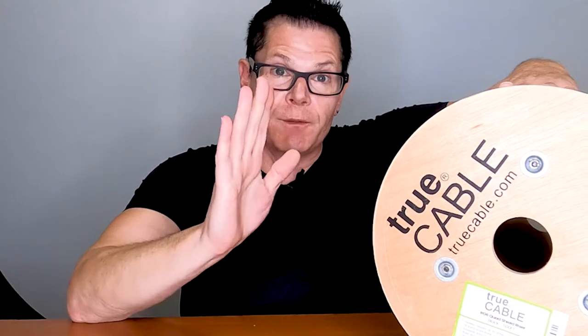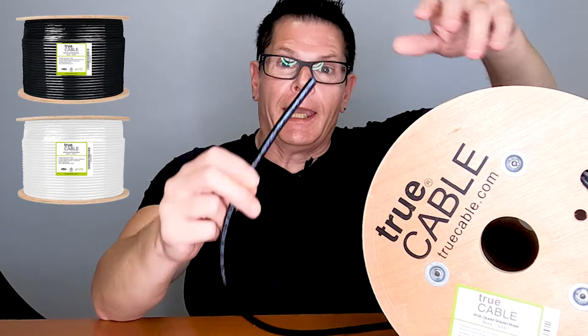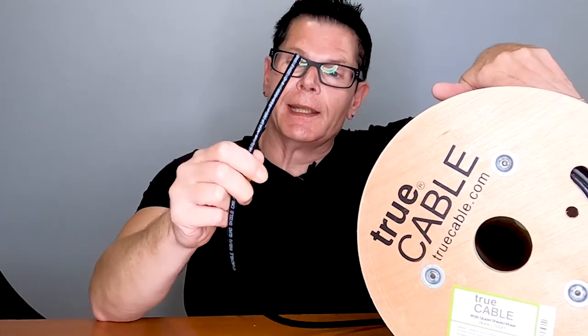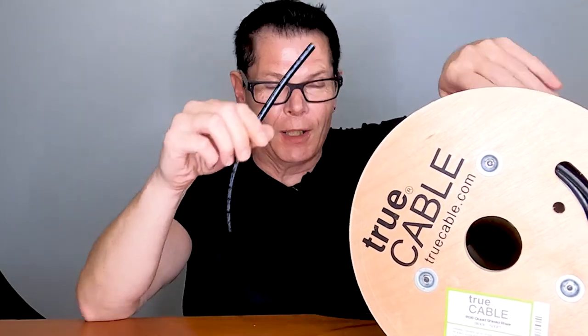We offer our quad shield in 500 foot and 1000 foot spools. This is a 500 footer and it comes in black and white. And this is basically the monster shielded version of coax.